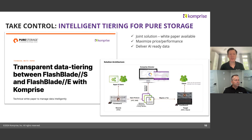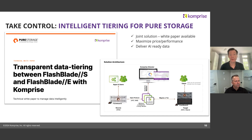Before we jump into the demonstration, we want to bring it back to the Pure Storage solution. We talked about cost savings and transparent tiering with our TMT — Transparent Move Technology — which has been core to Comprise. Over the last year and a half, we worked directly with the Pure team on a solution we call intelligent tiering for Pure Storage. There's actually a white paper published on the Pure website about this with a lot of specific details. Tell us about this, Randy — why it's important and why it's getting so much interest in the market.